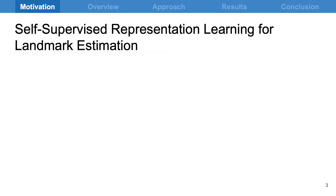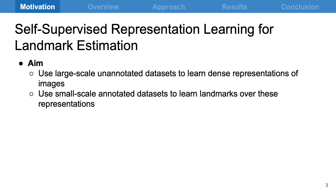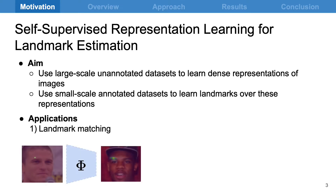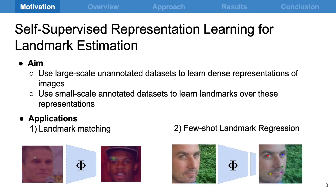Annotations are also ambiguous due to the granularity of the task. This has paved the way for self-supervised approaches to learn representations useful for landmark estimation. The aim is to make use of a large-scale unannotated dataset of a class of objects, such as faces, to train a model that is capable of finding corresponding landmarks given a landmark annotation.